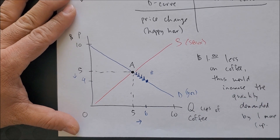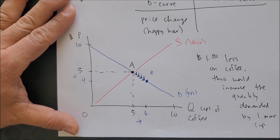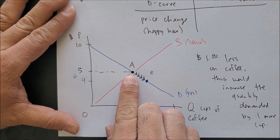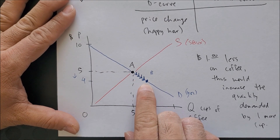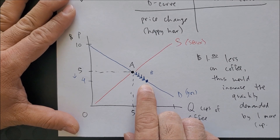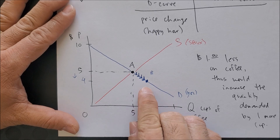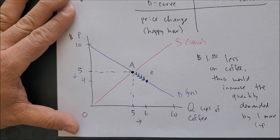At point B we can see something is not right. At point A, supply and demand intersected, but at point B the supply curve does not intersect at all — instead we see point B by itself.